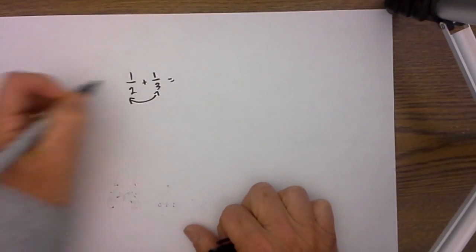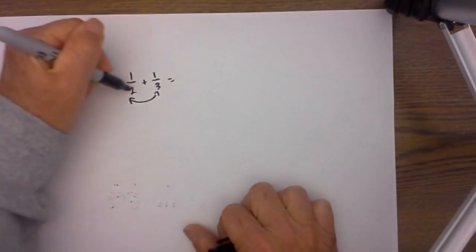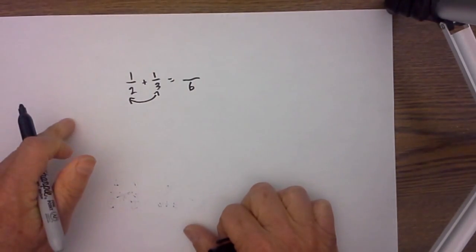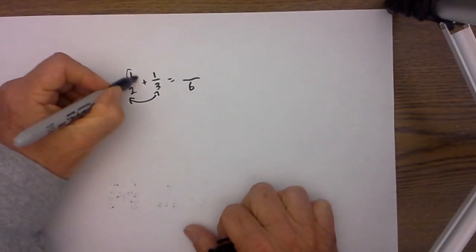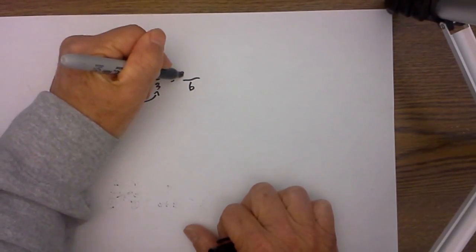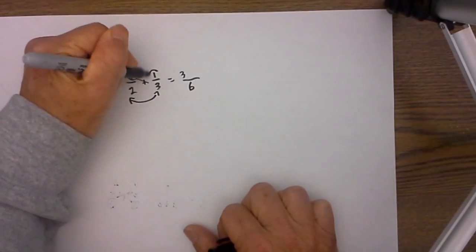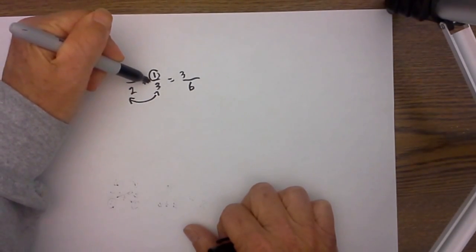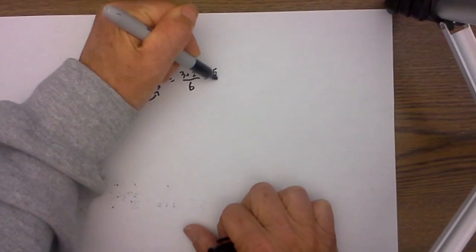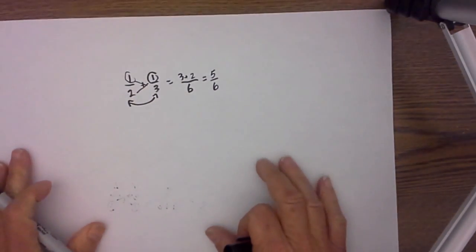The first step is to multiply the two denominators together. 2 times 3 equals 6. You then start on the left hand and cross multiply. 1 times 3 equals 3. Then move to the other numerator. 1 times 2 equals 2. Add those two together and there is your answer.